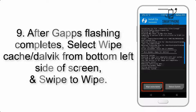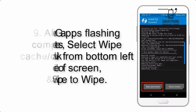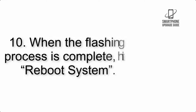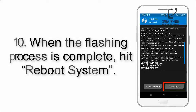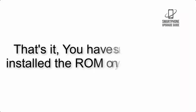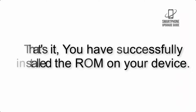Step 9: After GApps flashing completes, select Wipe Cache and Dalvik from the bottom left side of the screen and swipe to wipe. Step 10: When the flashing process is complete, hit Reboot System. That's it — you have successfully installed the ROM on your device.